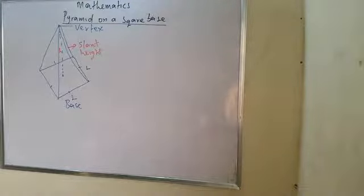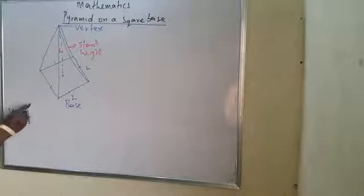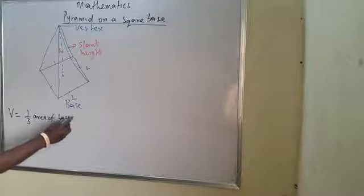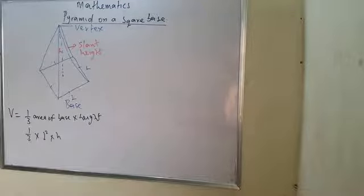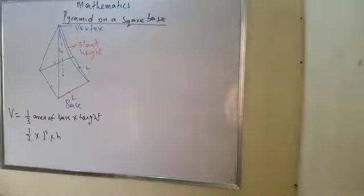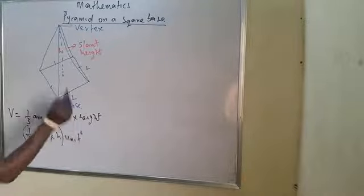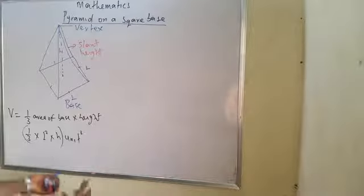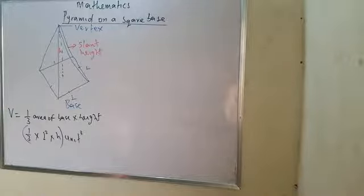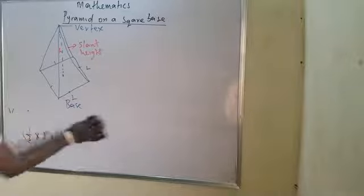Now let me quickly add more about this pyramid. The volume of this pyramid is 1 over 3 multiplied by the area of the base multiplied by the height. That gives us 1/3 multiplied by L squared multiplied by H, because the area of a square base is length squared, which is L times L. The result is in unit cubed. These are the key things you need to understand about the pyramid at this level.